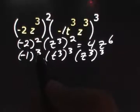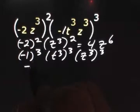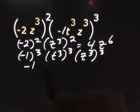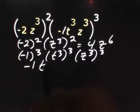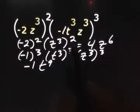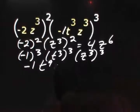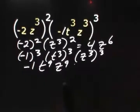Negative 1 to the third power gives us negative 1. T to the third raised to the third gives us t to the ninth, and z to the third raised to the third gives us z to the ninth.